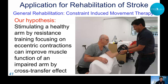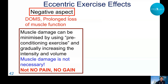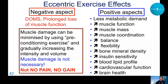In summary, one negative aspect of eccentric exercise is DOMS and prolonged loss of muscle function. However, muscle damage can be minimized by preconditioning or gradually increasing intensity. Muscle damage is not necessary for muscle adaptation — no pain, no gain is not the rule. Eccentric exercise has many positive aspects: less metabolic demand, but can increase muscle function, muscle mass, coordination, balance, flexibility, bone mineral density, insulin sensitivity, blood lipid profile, cardiovascular function, and brain health.